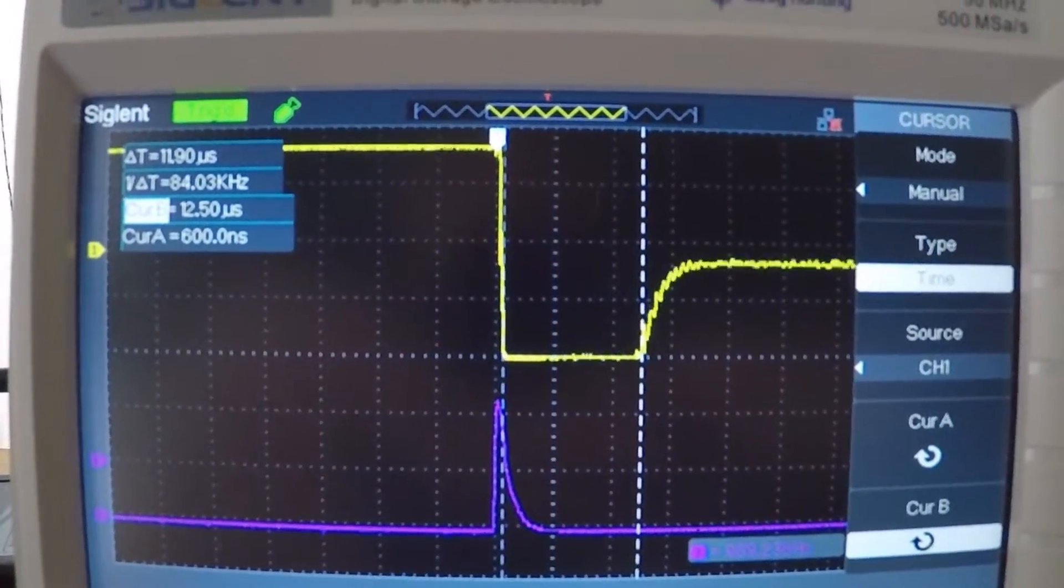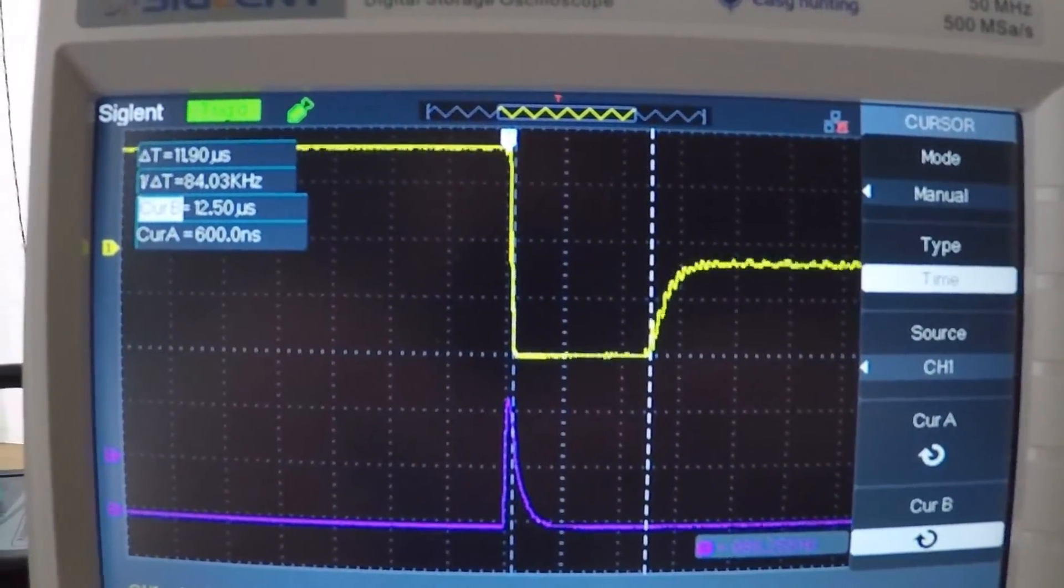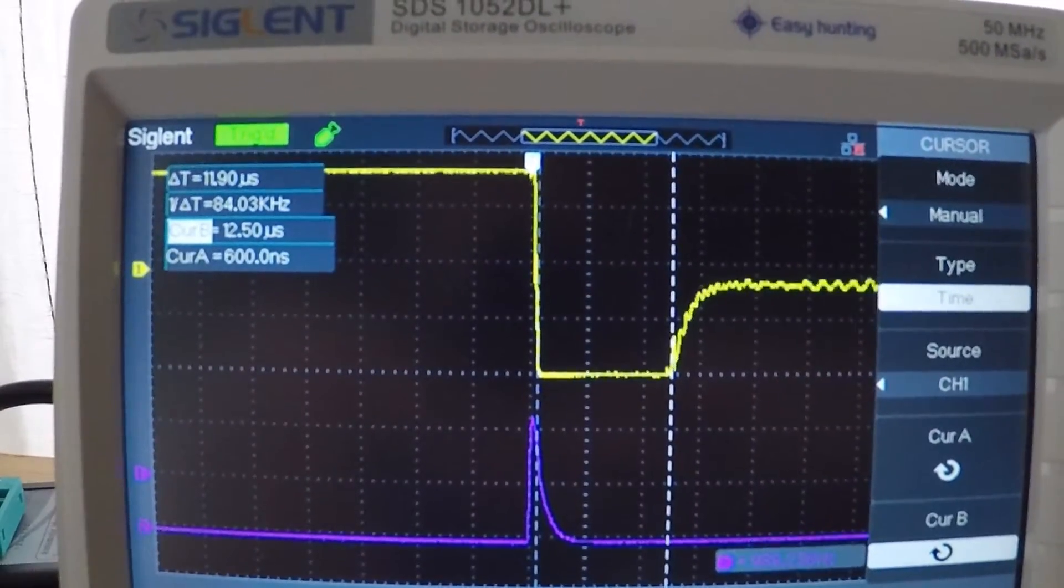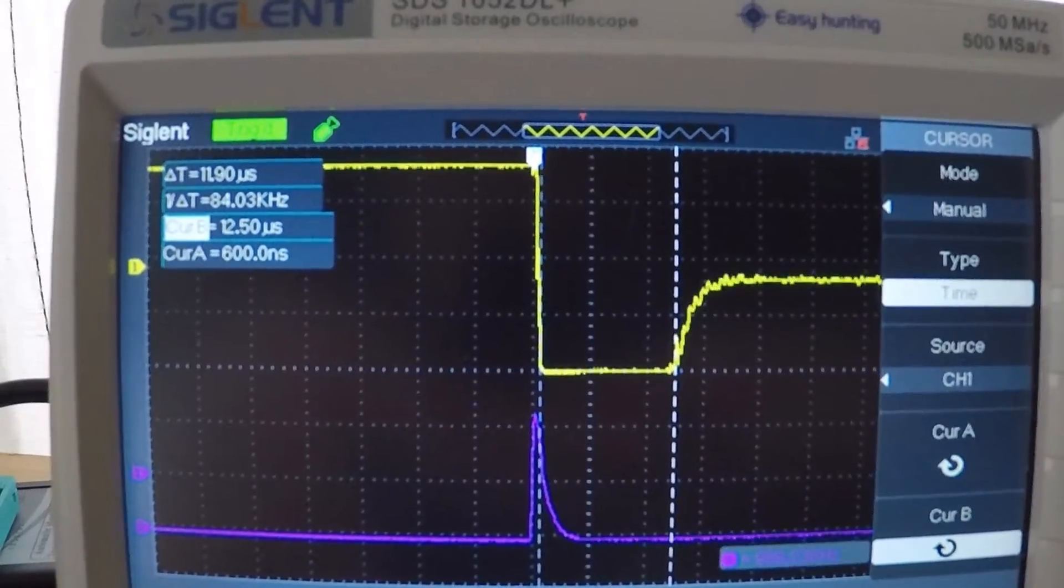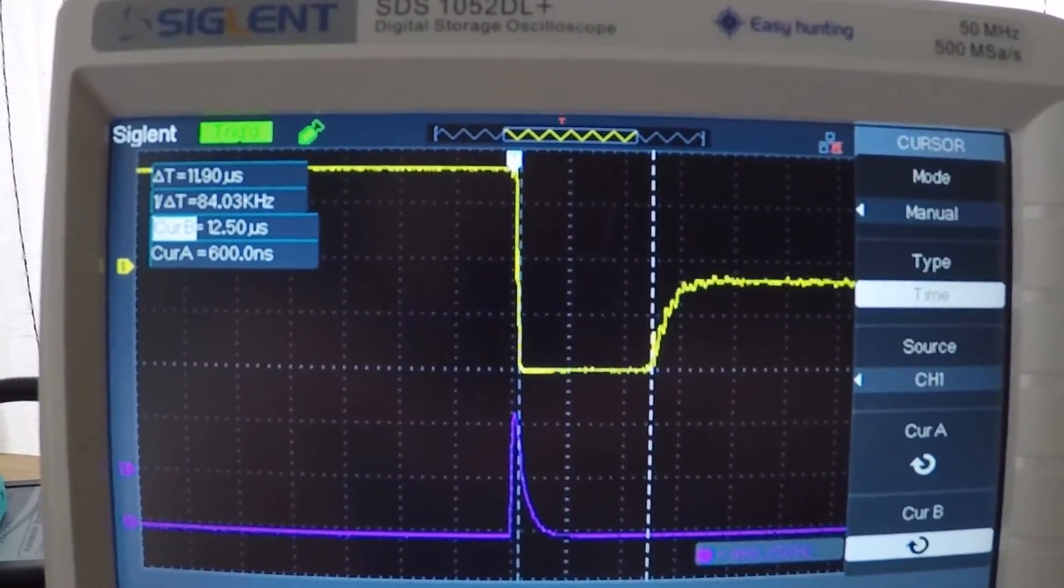But I'm getting better detection, at least in the air. Proof is in the pudding to see what I get when I'm out in the water. So for now I'm going to leave in the 4562. Thanks.